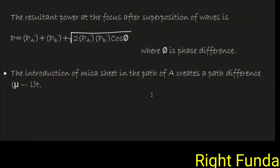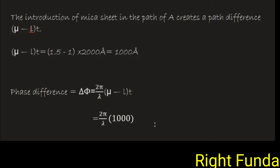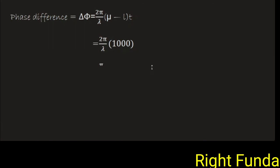The introduction of this material in the path creates a path difference. If thickness t is there, mu minus 1 times t is the path difference introduced between the two rays. So there is a path difference, then from this phase difference can be calculated. Mu minus 1 times t equals 1000 angstrom is the path difference. From this I can calculate the phase difference, delta phi equals 2 pi by lambda times mu minus 1 times t. If we substitute 1000 angstrom times 2 pi by lambda, and lambda equals 6000 angstrom, we get delta phi equals pi by 3.